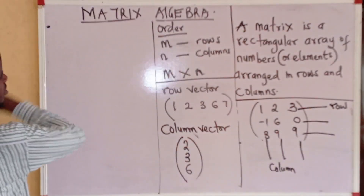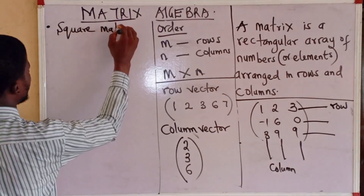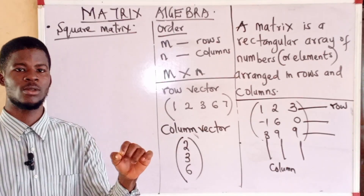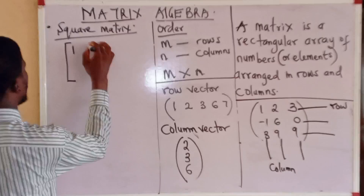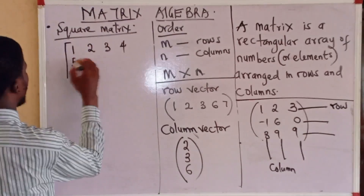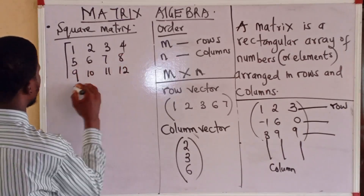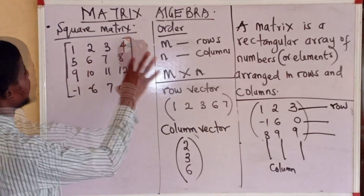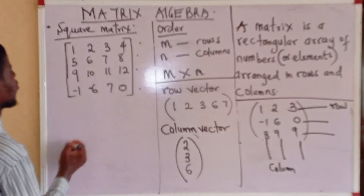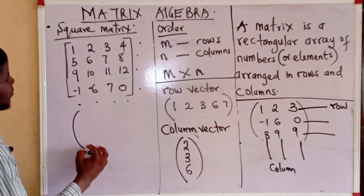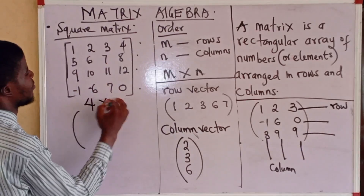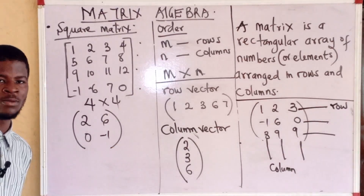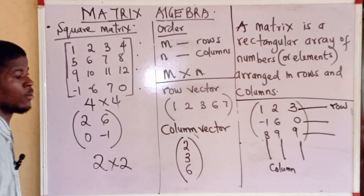Let's consider some types of matrices, like the square matrix. In a square matrix, the number of rows is equal to the number of columns. For example, a matrix with elements 1 through 16 arranged in 4 rows and 4 columns is a 4 by 4 square matrix. A 2 by 2 matrix with two rows and two columns is also a square matrix.